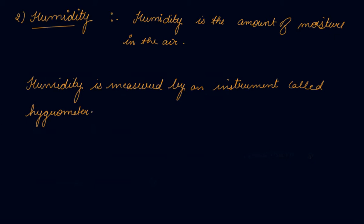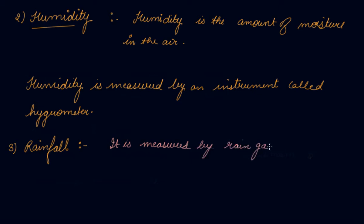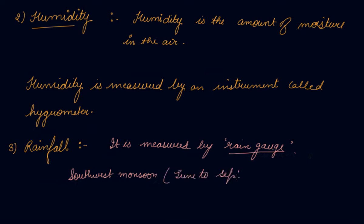Rainfall is measured by an instrument called a rain gauge — it is the third element of weather. To make your own rain gauge, see the laboratory section. In India, rain is mainly brought by two kinds of monsoon winds. The first is the southwest monsoon, from June to September, which brings heavy rain to most parts of the country.